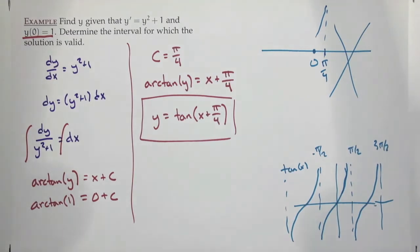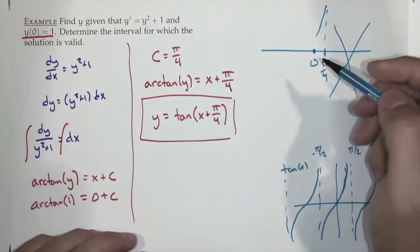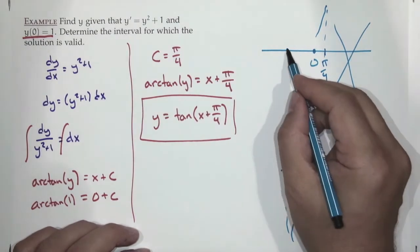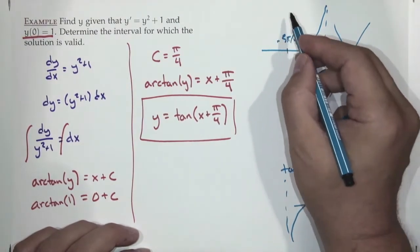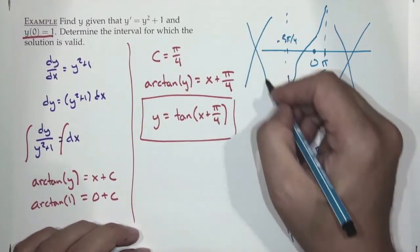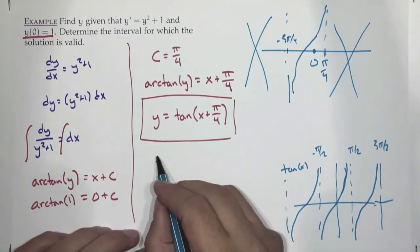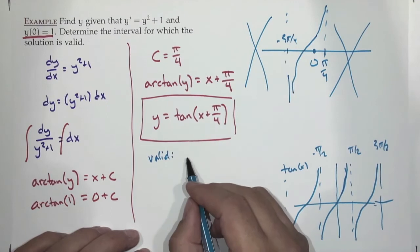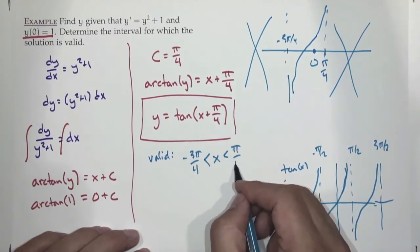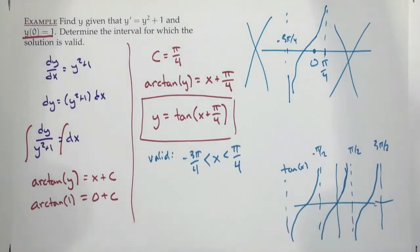Going the other direction: the asymptote that was at −π/2 is now shifted to −3π/4. So the solution is valid between −3π/4 and π/4, not including those endpoints since the function is undefined there.